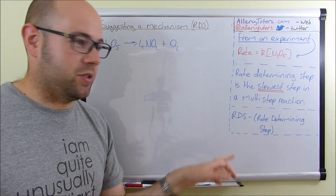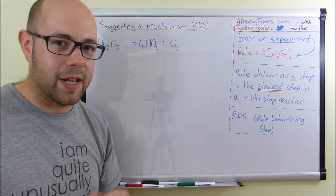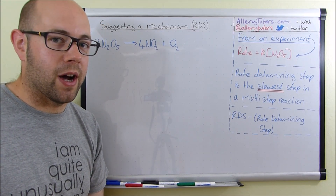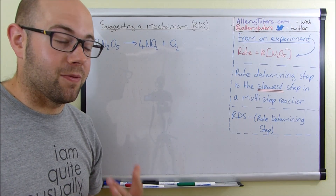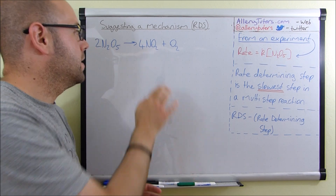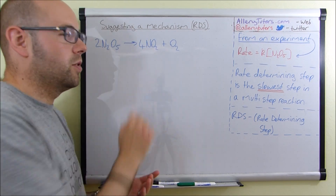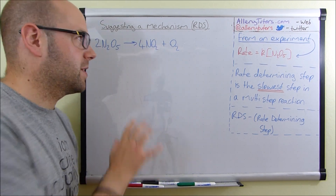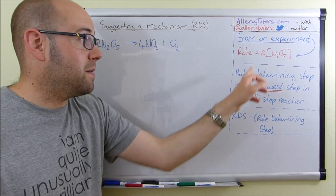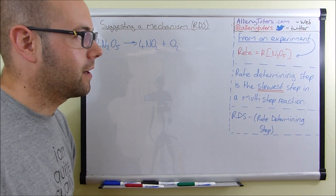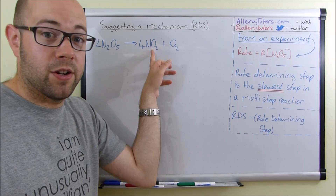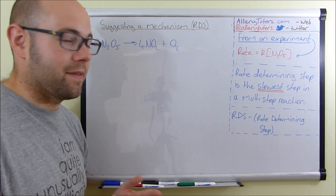Just a quick jargon buster: RDS is rate determining step. We've got this reaction here where two molecules of N₂O₅ decompose — not react, because there's no addition — to form four lots of NO₂ and O₂. You'll be given this in the exam along with the rate expression, although you may be asked to work the rate expression out in a previous question. You can't work out the rate expression from the equation alone.